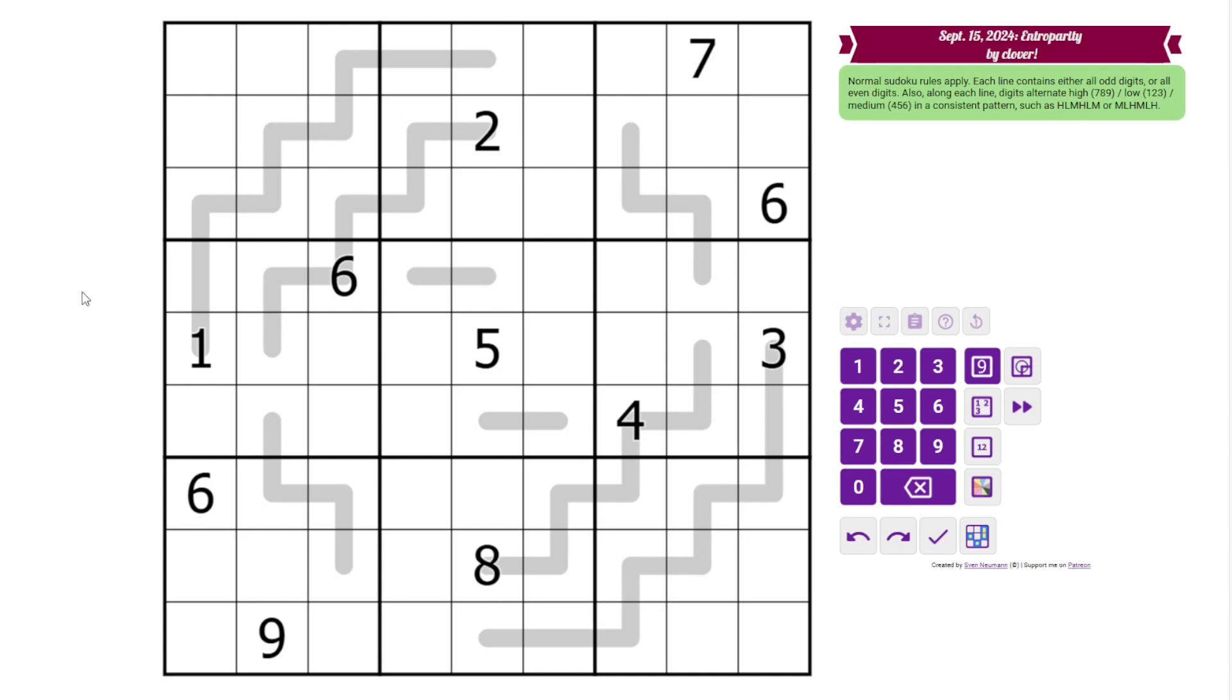The second property is that these are entropic lines. So if we think about dividing up the digits into three groups, 1, 2, 3, 4, 5, 6, 7, 8, 9, then along the lines, the digits alternate in a pattern among those groups. For example, this is a low digit, so we're going to have maybe a medium digit here and a high digit here, and then we repeat that pattern. Low, medium, high, low. If we had a high digit here, we would go low, high, medium, low, high, medium, and so on. So we just have to repeat that pattern in some order.